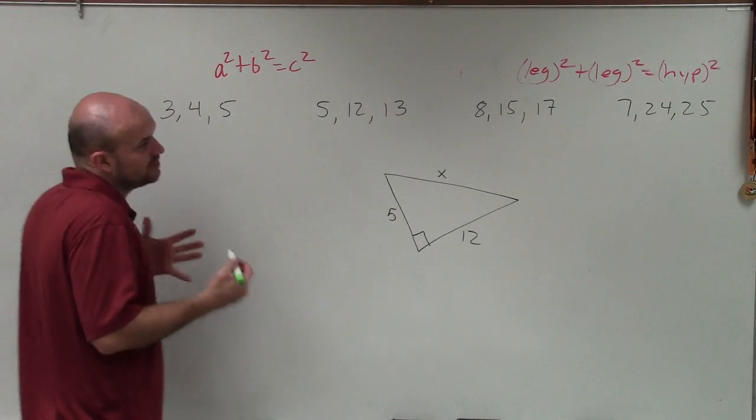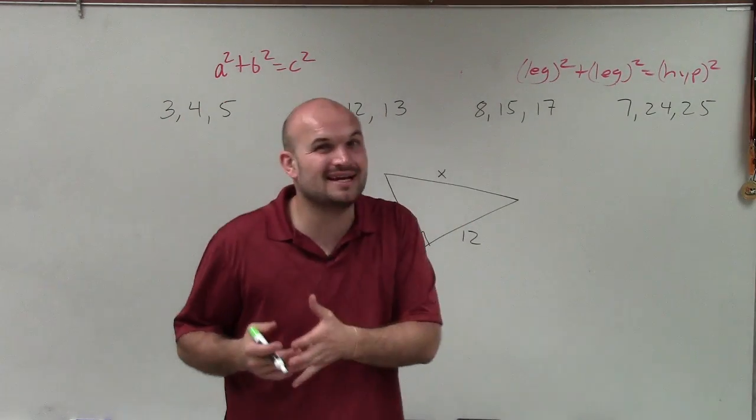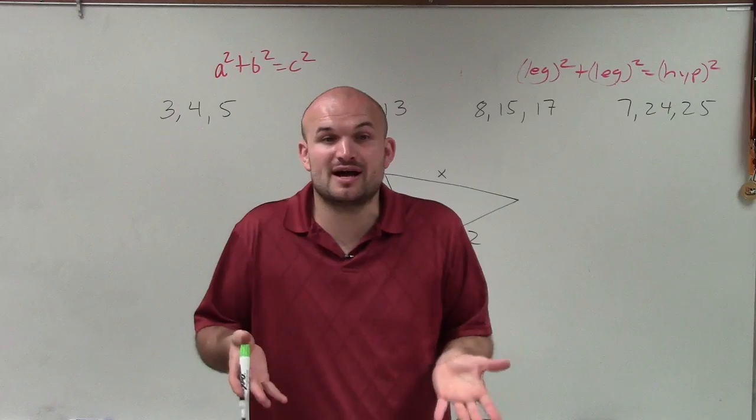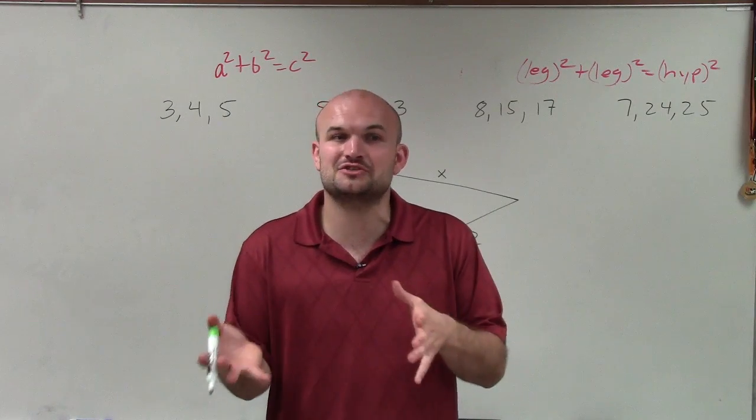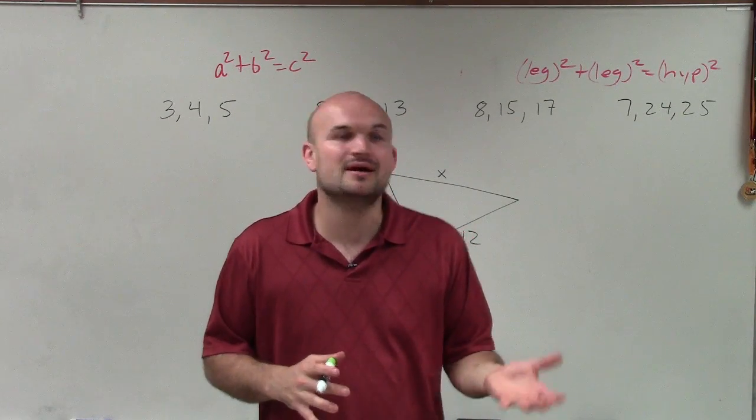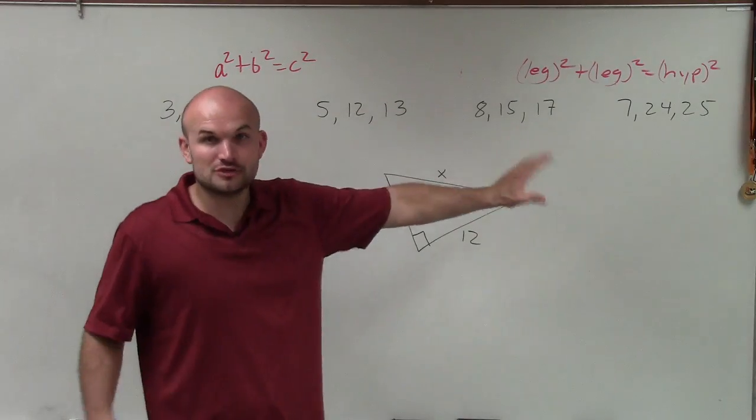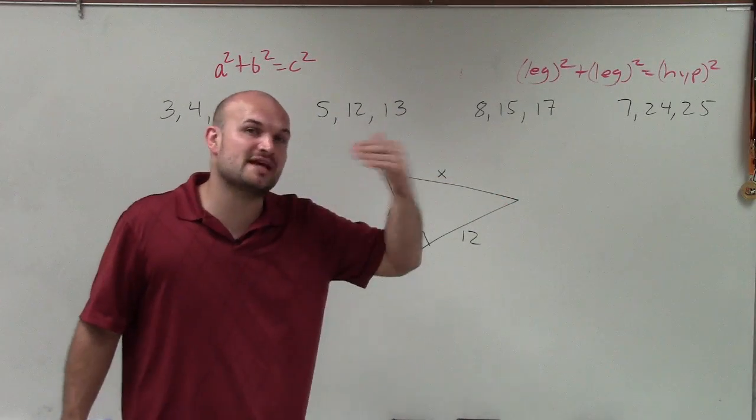It's very helpful to know these numbers because if you see that the sides of a triangle are a Pythagorean triple, you don't have to do the Pythagorean theorem because they've already been proven to work for the Pythagorean theorem or to produce a right triangle.